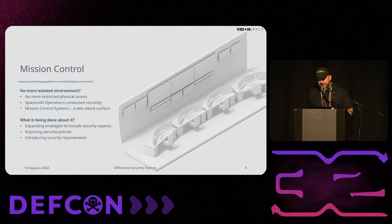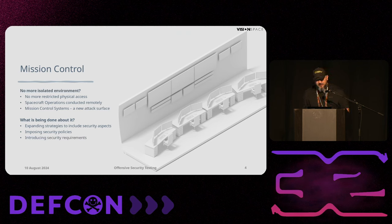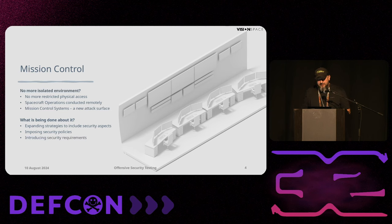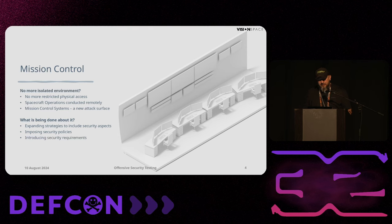So what is being done about it? From the space community perspective, we expand strategies to include security aspects, impose security policies, and introduce security requirements to our systems. However, I don't think it's going to be enough at this point. And as you will see later, there is one very specific element that is missing from those actions, which is the offensive security testing.